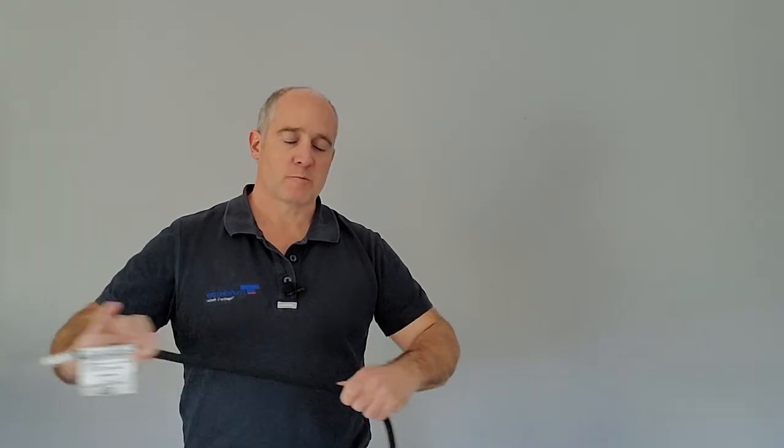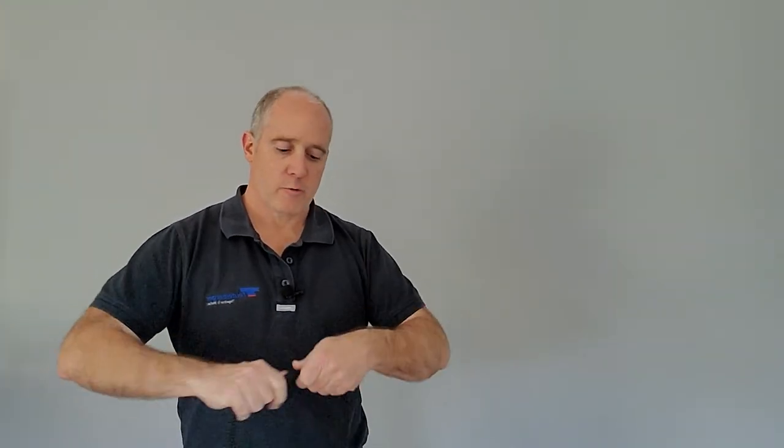Next thing we're going to check is the general condition of the rope overall. This is what most people think of when they think about rope inspection. Most people will pull the rope through their hands, flake it out onto a tarp, and call it a day. That's not good enough.